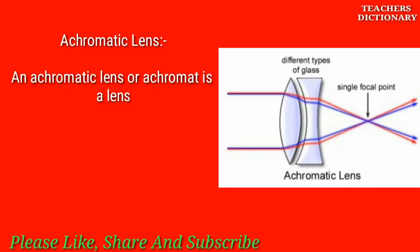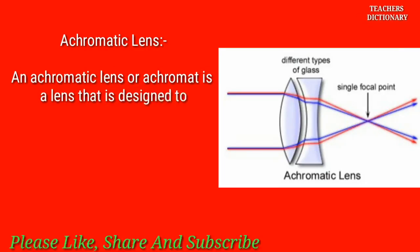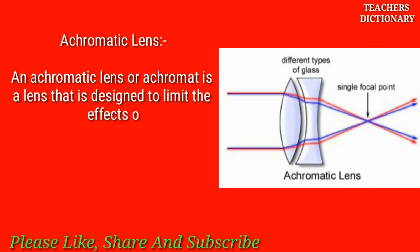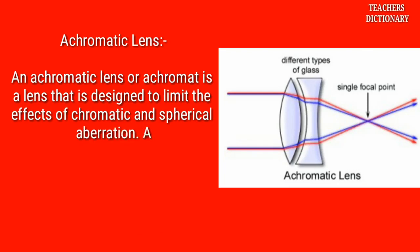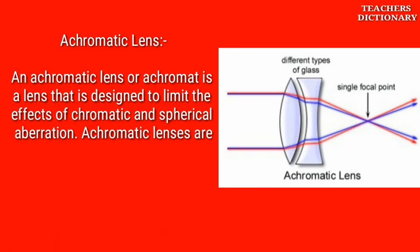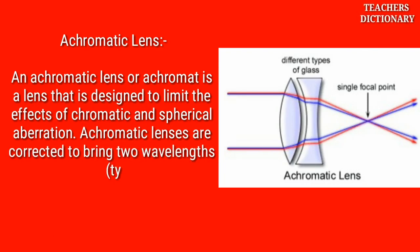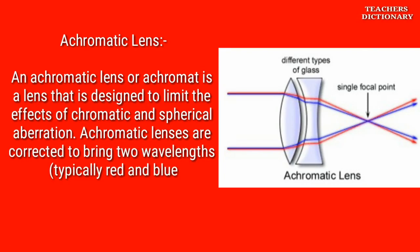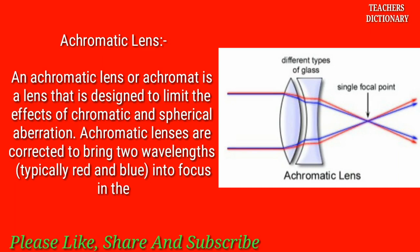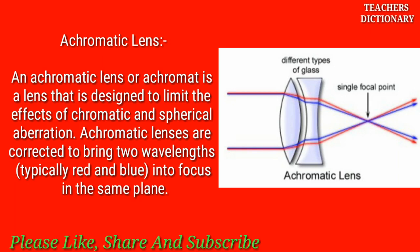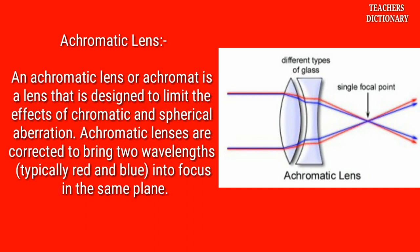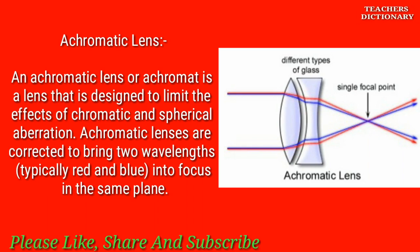Achromatic lens: An achromatic lens, or achromat, is a lens designed to limit the effects of chromatic and spherical aberration. Achromatic lenses are constructed to bring two wavelengths, typically red and blue, into focus in the same plane.